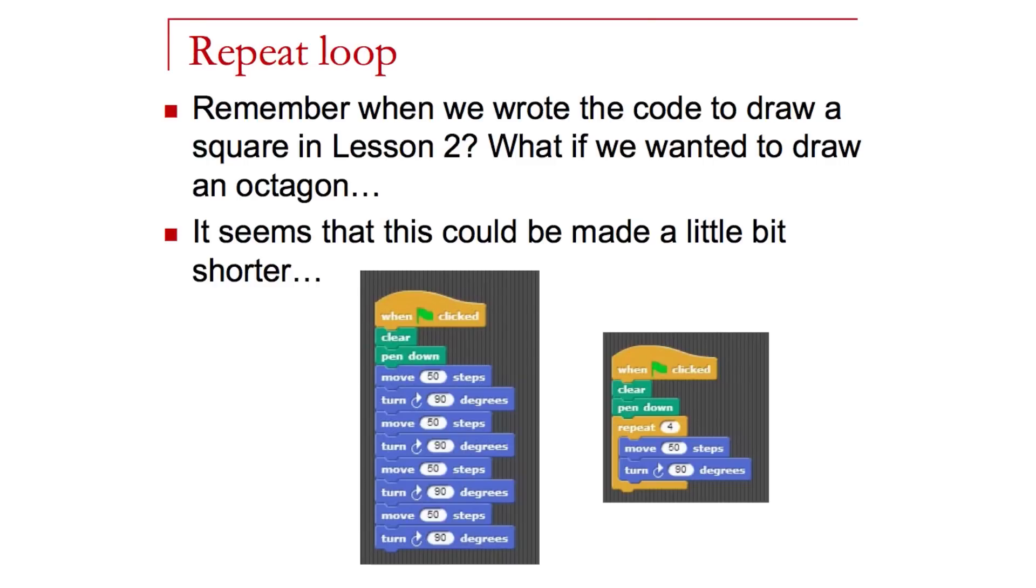What if I wanted to draw an 8-sided figure, an octagon, or what if I wanted a 100-sided figure? That would be a lot of blocks using this approach. A 100-sided figure, I would have to drag over 200 blocks there. 100 blocks to do a move, and 100 blocks to do the turn at a certain angle. That would be a lot of blocks, and it becomes kind of tedious to add.